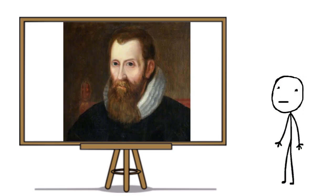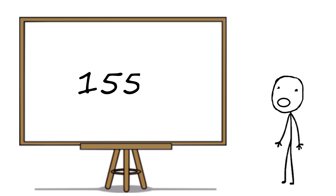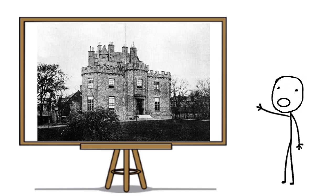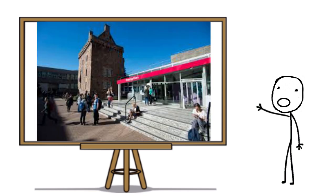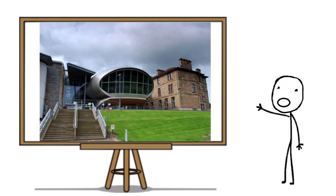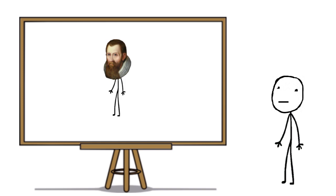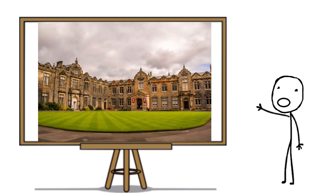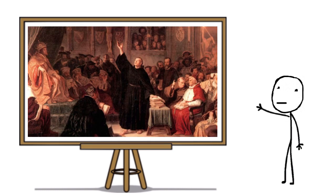Anywho, John Napier was born in 1550 in the Merchiston Castle in Edinburgh, Scotland. Fun fact: today the Merchiston Castle sits on the school campus of Edinburgh Napier University. At the age of 13, he went to school at St. Salvator's College, St. Andrews, but he received poor education due to the ongoing reformation and left without taking a degree.